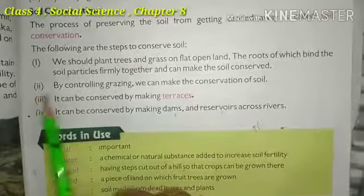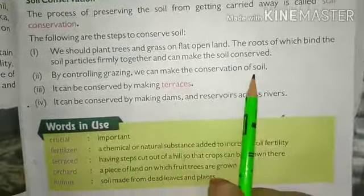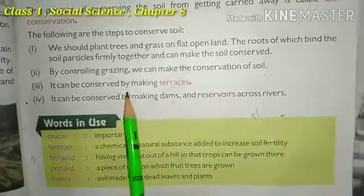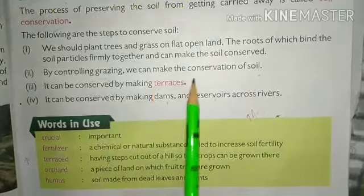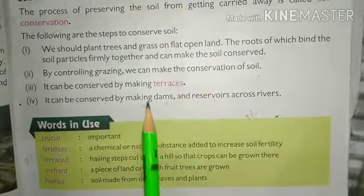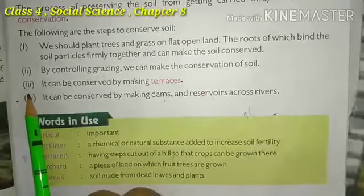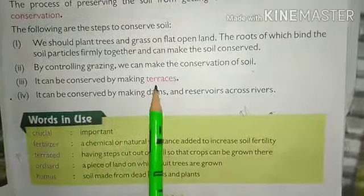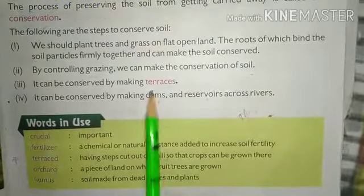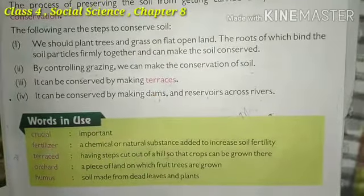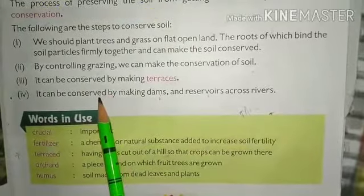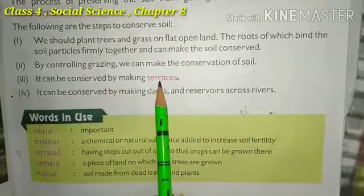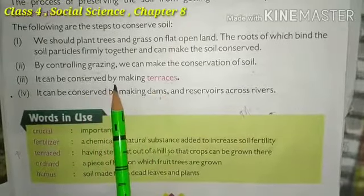Number two: by controlling grazing we can achieve soil conservation. We should ensure that cattle do not overgraze, so the roots of the soil are not disturbed and wasted. Number three: soil can be conserved by making terraces. In hilly areas, terrace farming is done so that water cannot wash away the soil, thereby preserving it.